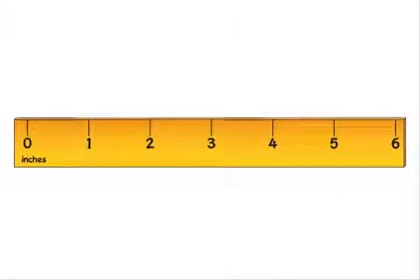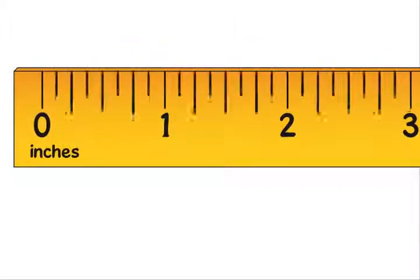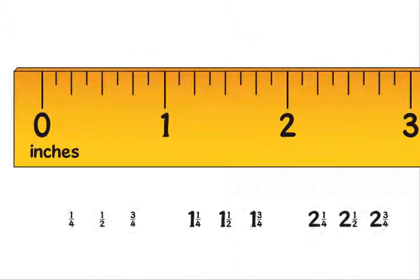We use the idea of number lines when we measure things. An inch ruler works like a piece of a number line. The inch marks show whole numbers. The marks between show fractional parts.